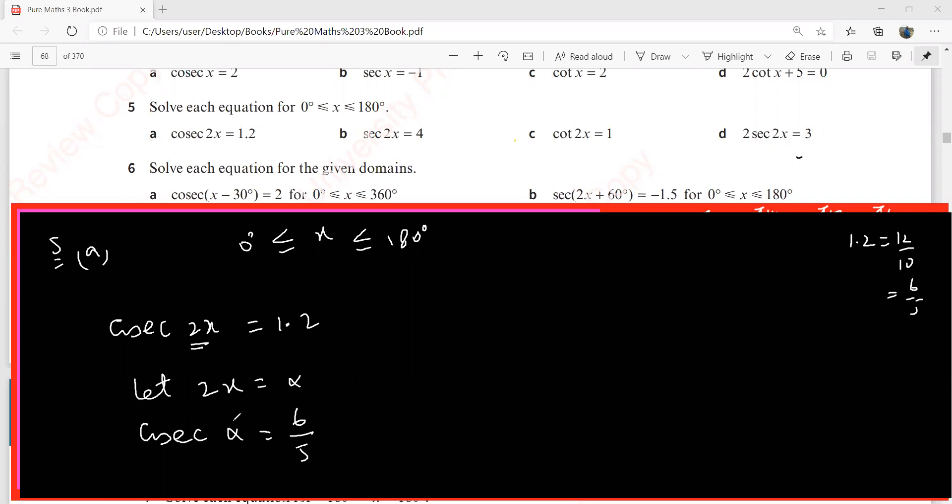Since we introduced alpha into our equation, we need to give its limits. If x is between 0 and 180, then alpha has to be between 0 and 360. We've done this in our A1 trigonometry. Put the lower limit zero here, you get alpha zero. Put the upper limit 180, you get alpha as 360.